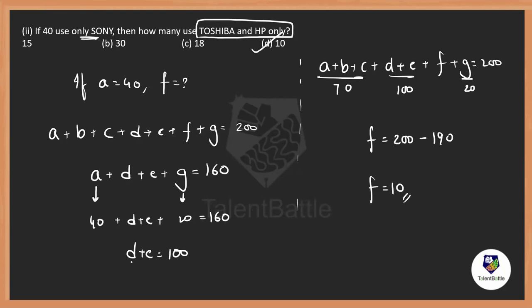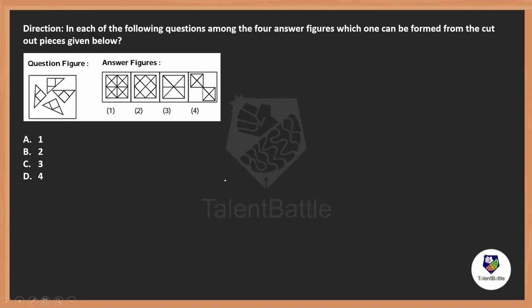Look how simply we answered that question just by using variables! That's how we can easily answer Venn diagram questions. Now let's move on to the next question. In the given question there are four figures which can be formed from the cut pieces of the given shape. From the cut pieces shown, which one of these four figures can be formed? Everyone try it first.